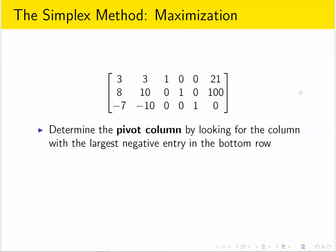Our first step is to find the pivot column by looking for the column with the largest negative entry in the bottom row. So in the bottom row, we look at the negative entries. The largest negative entry is negative 10.